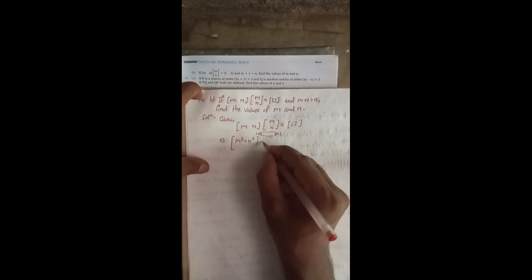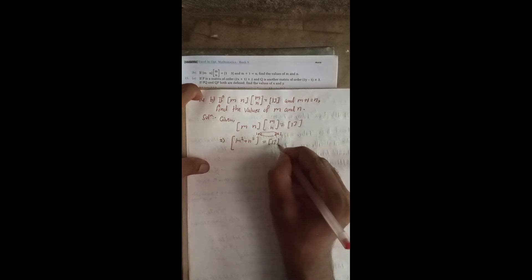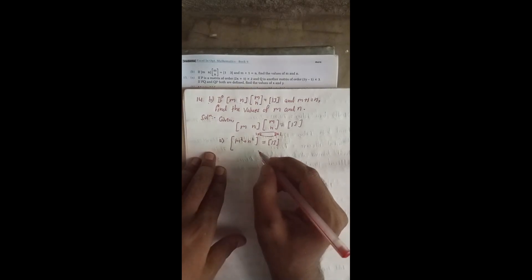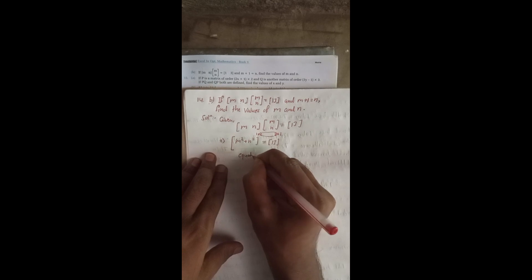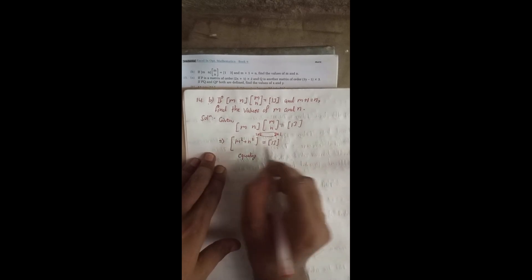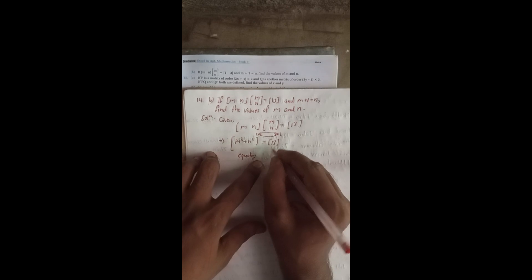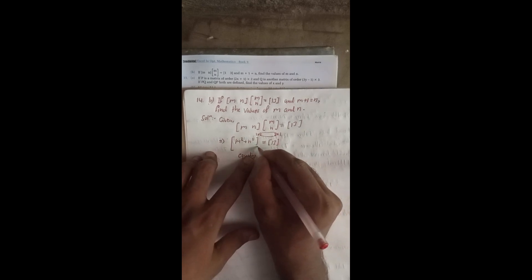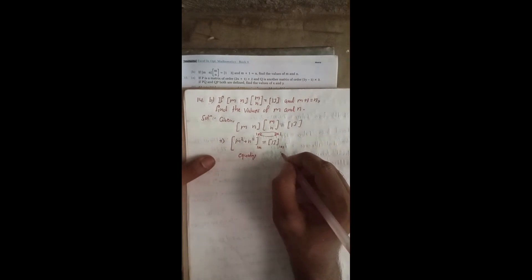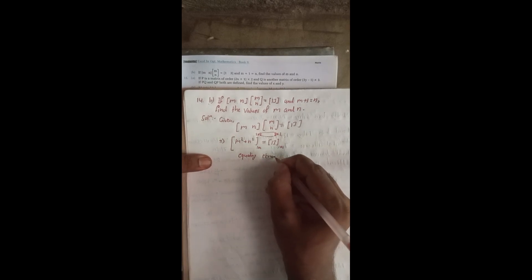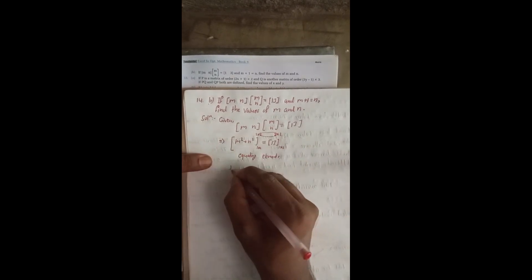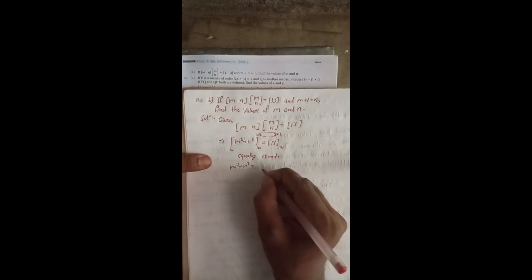This 1×1 result is equal to 13. Now we have to equate this. This single element means this is a 1×1 matrix and this is also a 1×1 matrix. Equating elements, we will get M² plus N² is equal to 13.